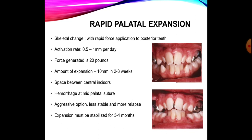The major goal of rapid palatal expansion was to maximize the skeletal change and minimize the dental change. The theory behind rapid palatal expansion is that if a rapid force is applied to the posterior teeth of the maxilla, there would not be enough time for tooth movement. The force would be transferred directly to the suture, opening it up while the teeth move only a little. In rapid palatal expansion we activate the device 0.5 to 1 millimeter per day, which accounts for around 10 millimeters of expansion in two to three weeks.